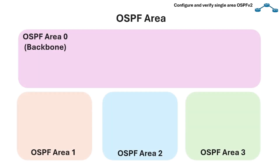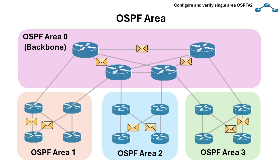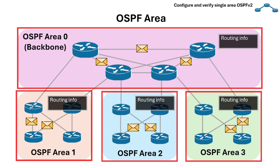OSPF implements the area concept. An area is a segment of the network where routers exchange routing information. It helps in scaling large networks by dividing them into smaller sections, reducing the amount of routing information each device must process and store.